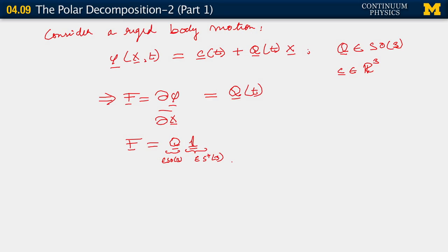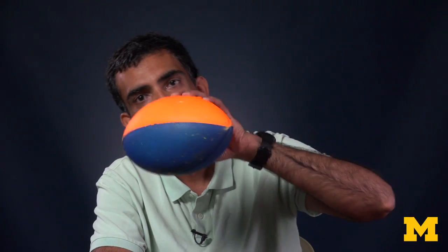What does this imply for E then? E equals one-half of F transpose F minus the isotropic tensor, but F is just Q. So we have Q transpose Q minus the isotropic tensor, which is identically zero — always, forever. So our body could be spinning around till the end of time, and the Lagrange strain as measured would be dead zero, always.